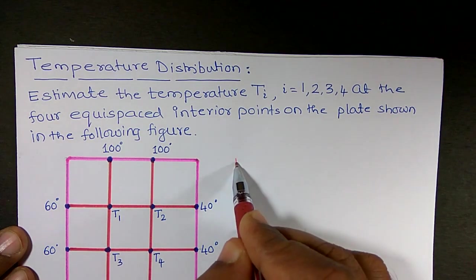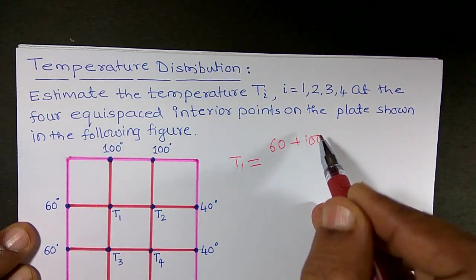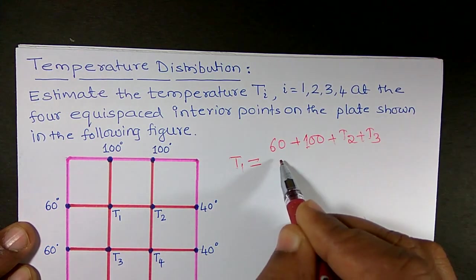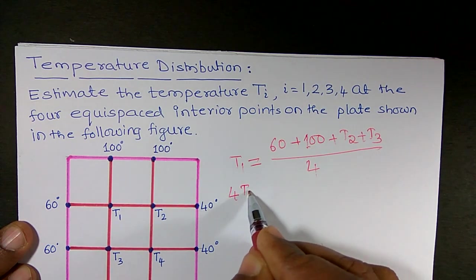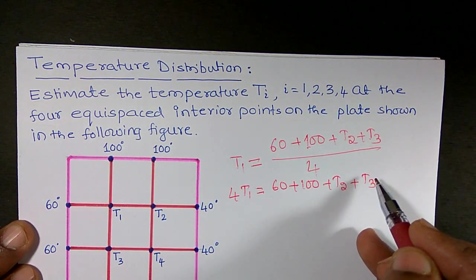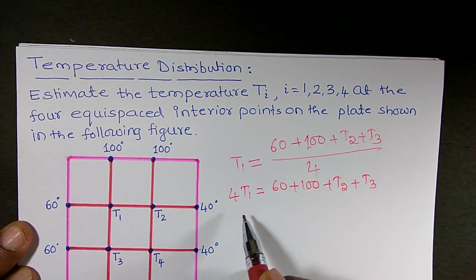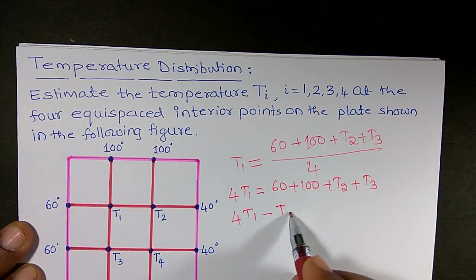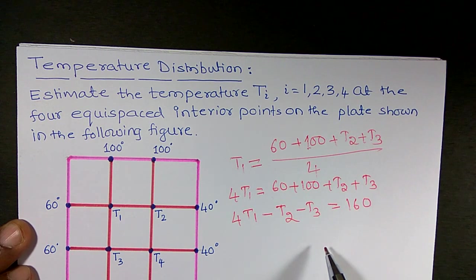Starting with T1: T1 is equal to (60 + 100 + T2 + T3) divided by 4, according to our assumptions. Or equivalently, 4 times T1 equals 60 plus 100 plus T2 plus T3. Rearranging, 4T1 minus T2 minus T3 equals 160.